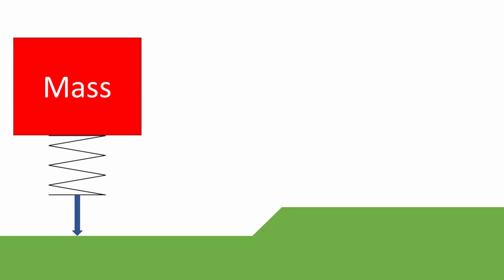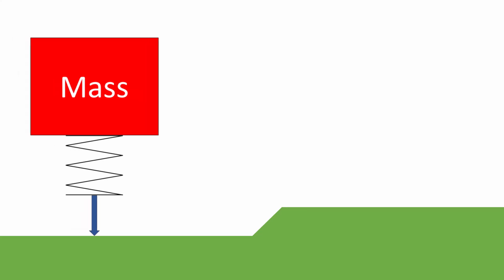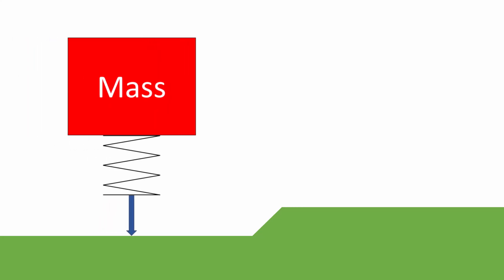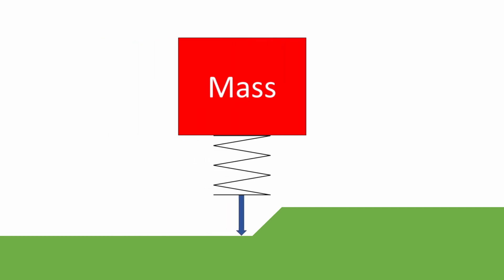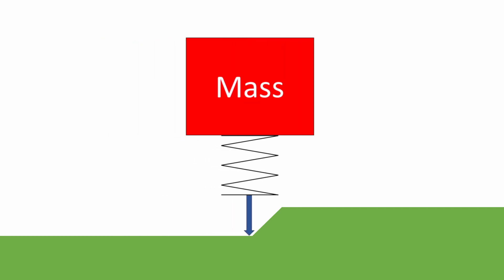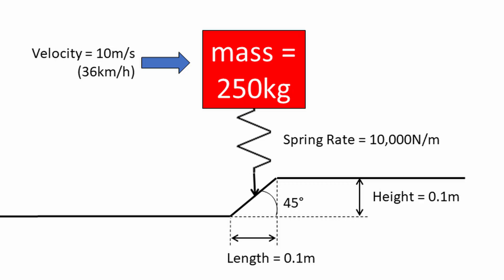Here we have a mass that is supported by a spring resting on the ground, moving at a velocity of 10 metres per second, or about 36 kilometres per hour, approaching a ramp. The ramp is 0.1 metres long and 0.1 metres high, so it's at an angle of 45 degrees.